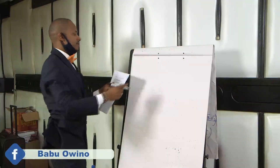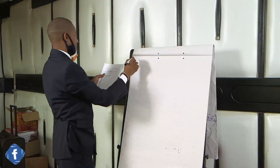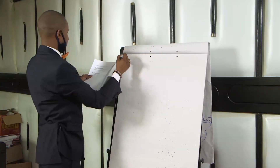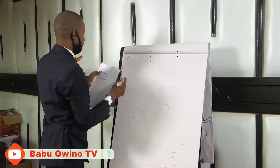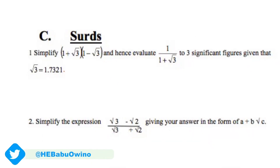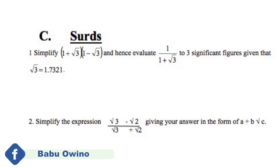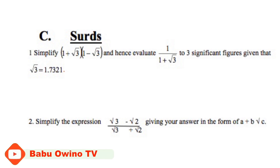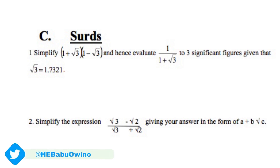The next question is question number 6. Now that's part 2 of question number 6: simplify the expression root 3 minus root 2 divide by root 3 plus root 2. So when you are told to simplify this expression, do not panic. Just multiply the whole expression by the conjugate — multiply the denominator by the conjugate of this value.